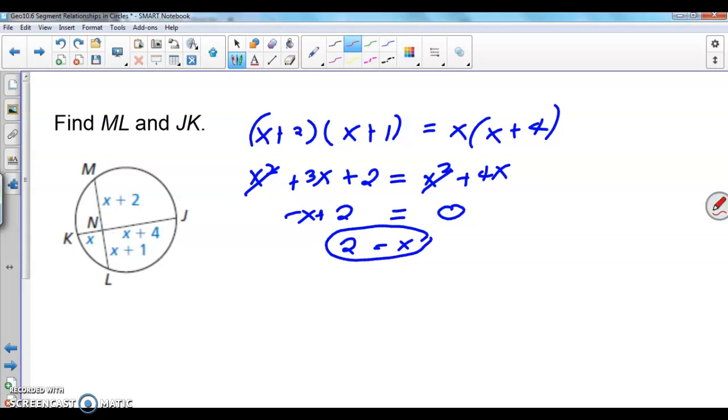So, ML now, so ML will now become, if x is equal to 2, so that's 4 plus 3, so that will be 7, while KJ is equal to, so this is 2, and then this will be 6. So, together, that will become 8. There you go, so those are the lengths of the 2 chords. And take note, they don't have to end up equal to each other, because, well, they're not diameters, they are not equidistant from the center either, so they don't have to be congruent to each other.